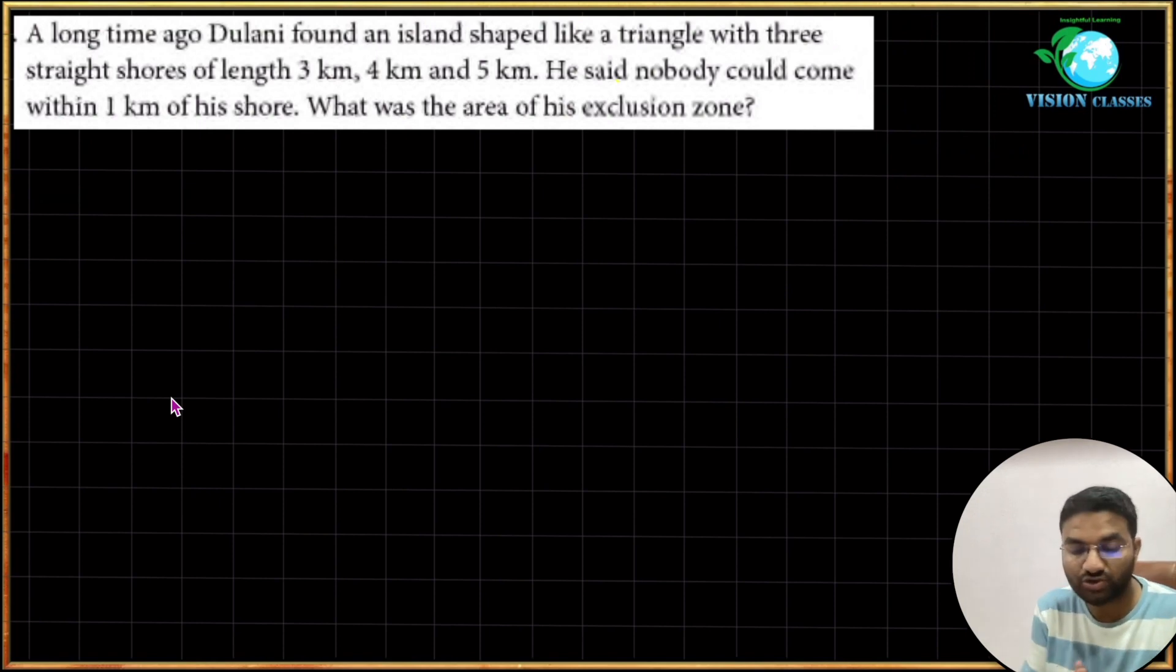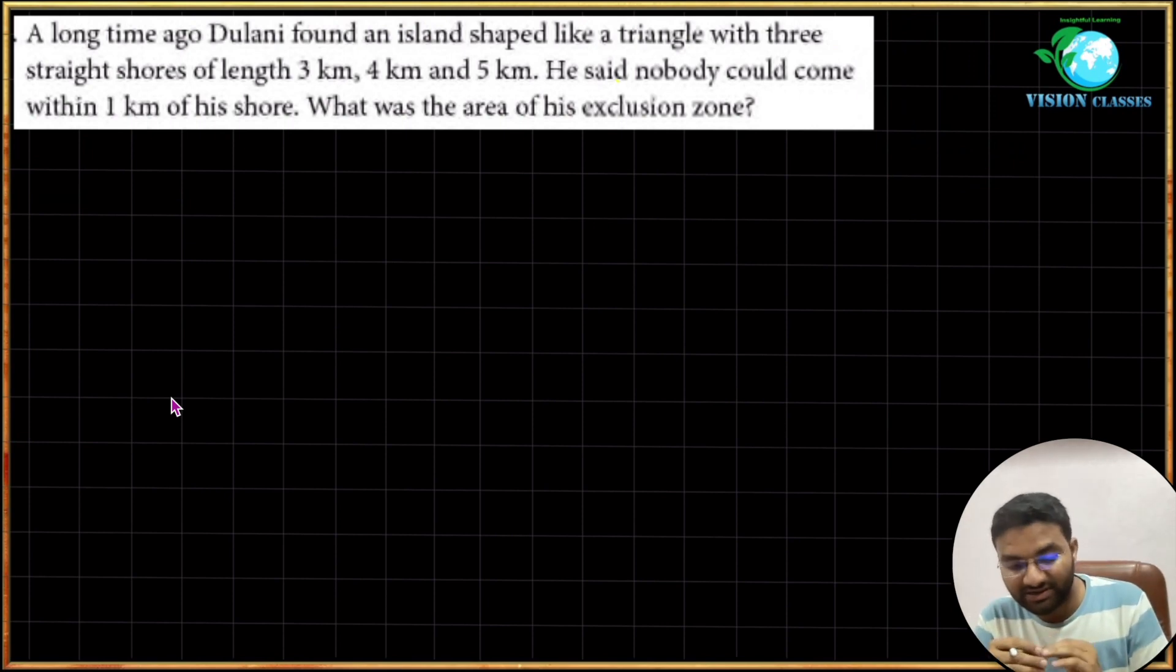The triangle has three sides or shores of length 3 kilometers, 4 kilometers, and 5 kilometers. He said that nobody could come within 1 kilometer of the shore. What was the area of his exclusion zone? Okay, so this is a question relating to area.